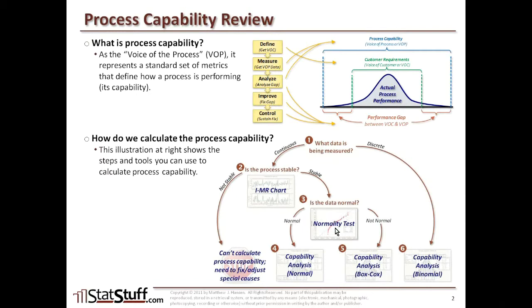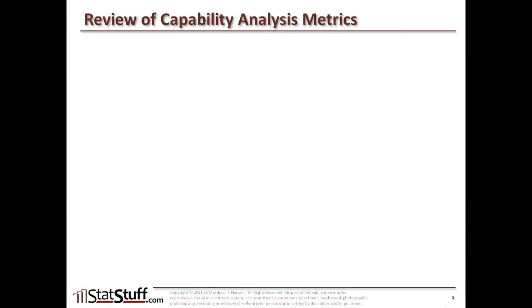Once we know the process is stable, then we might go to the third question, which is figuring out, is the data normal? We'd run a normality test on that. If the data is normal, then we'll find ourselves drilling down to the capability analysis for normal data. But if the data is not normal based on the normality test, we'll use the capability analysis for non-normal data, where we would use a Box-Cox transformation, for example. However, if we go back to the original question, and we're finding that the data we're using is actually discrete data, then we'll find ourselves using the capability analysis that's more for binomial type of data.